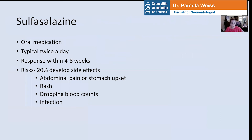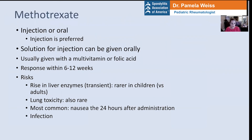Sulfasalazine has been around for a long time. It's an oral medication, typically taken twice a day. This medication does not work overnight, so you need to be patient — typically we see a response within four to six weeks. The occurrence of side effects is relatively frequent: about 20% of children and adults on this medication develop side effects, which usually include abdominal pain or stomach upset, rash, dropping blood counts, or infection.